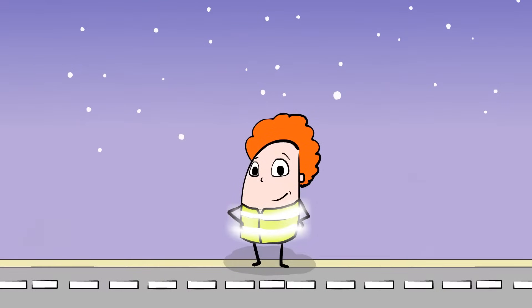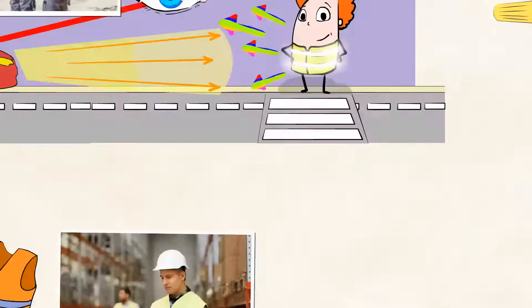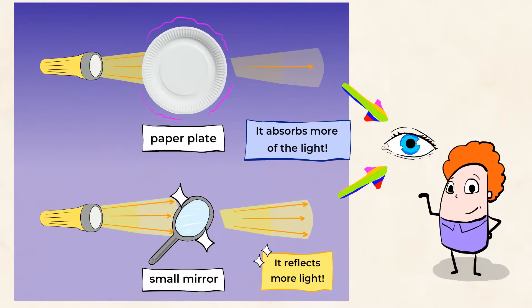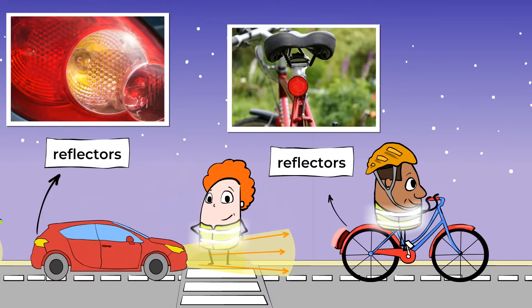All right, time for a quick recap. Our eyes need light in order to see things. Light from a light source hits an object and is then reflected back into our eyes. And this is how we see. Certain materials are more reflective than others, like mirrors or reflectors on a car or safety vest.